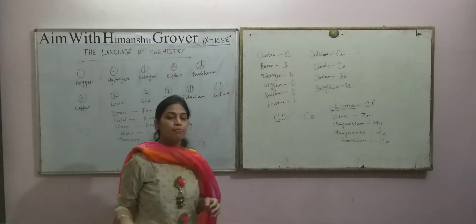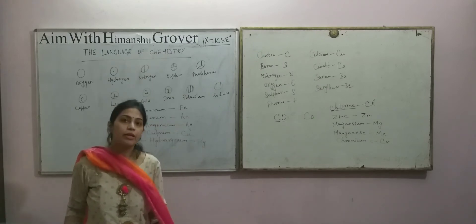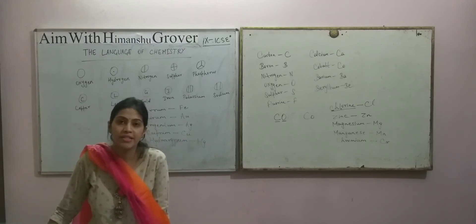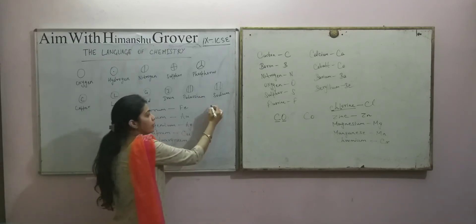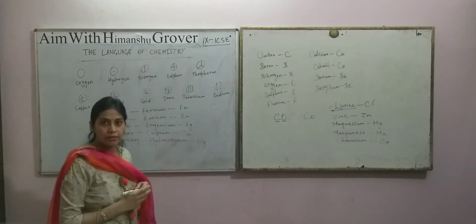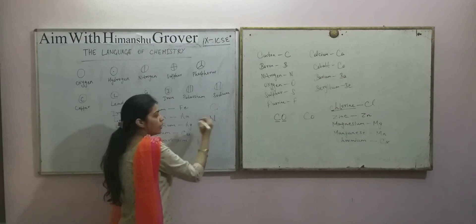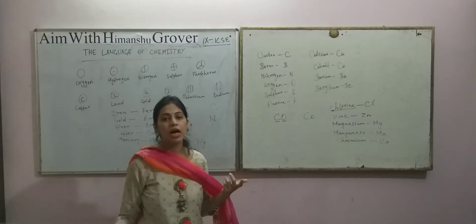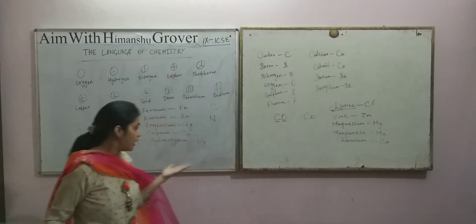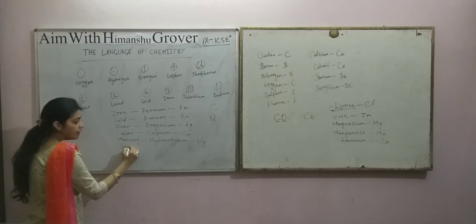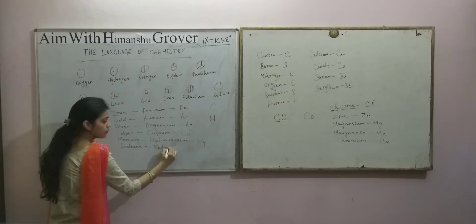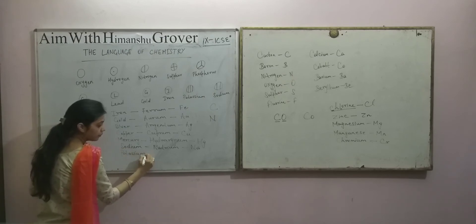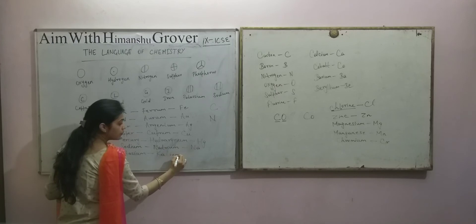These are atomic symbols. The first significance is that a symbol represents the name of the element. For example, C represents carbon, N represents nitrogen. Na comes from the Latin name natrium for sodium, so the symbol is Na. Potassium's Latin name is kalium, so the symbol is K.